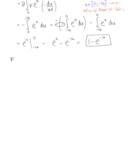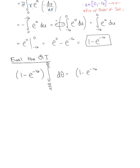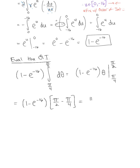Last but not least, we evaluate the outer integral. The quantity (1 minus e to the negative 16) is constant, so we keep it outside the integral from pi over 4 to pi over 2 d-theta. This gives (1 minus e to the negative 16) times theta, evaluated from pi over 4 to pi over 2, which equals (1 minus e to the negative 16) times (pi over 2 minus pi over 4) equals pi over 4. Our final answer is pi times (1 minus e to the negative 16) over 4.